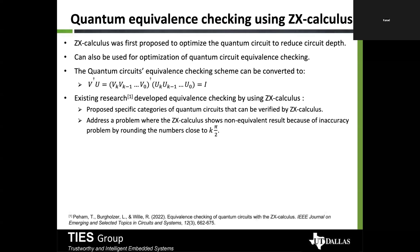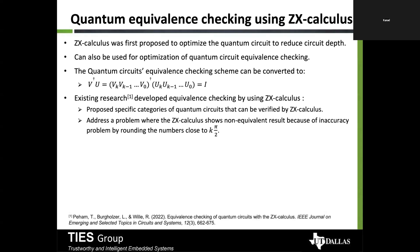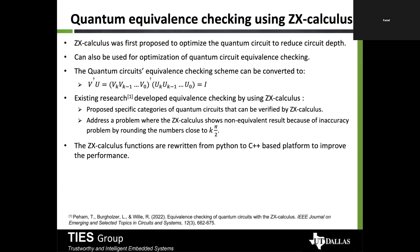Existing research developed equivalence checking using ZX calculus, proposing specific categories of quantum circuits that can be verified this way. One issue addressed is that ZX calculus can show non-equivalent results due to inaccuracy problems — rounding numbers close to kπ/2. ZX calculus is very strict: if there's even a small inaccuracy, it will flag circuits as non-equivalent. The researchers provided an approach to detect these cases and ported the ZX calculus functions from Python to C++ to improve performance.